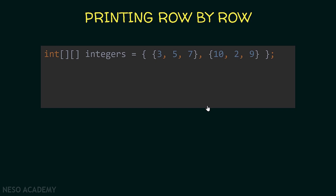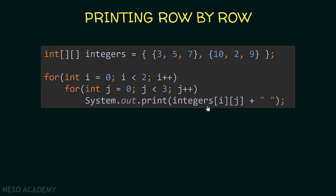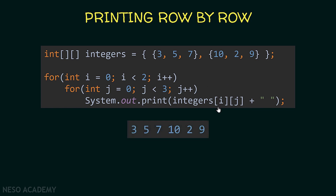Have a look over here — we have the same array and now we will use this code to print all the elements. As you can see we have nested loops. The outer loop has a variable i that starts from zero and i is less than the number of rows, so we are iterating over all the rows with i++. Inside this loop, each time we will iterate three times starting from zero up until two, so for each i we iterate three times. Each time we print integers[i][j], so for each row we iterate over all the elements inside it and print them. And this will be the output of the program.